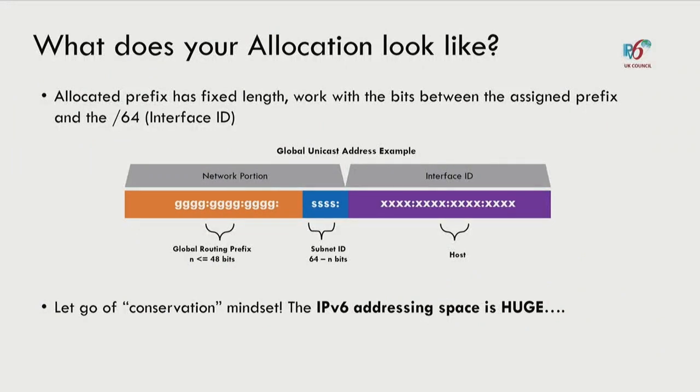Once you have your global unicast address prefix, you work with the bits between the allocated prefix and the interface identifier. The graphic behind me illustrates this: the global routing prefix is usually /48 or shorter, and anything between that number and /64 is where you create your addressing plan. The key message is: let go of the conservation mindset. The space is really huge, so you can be comfortable and stretch to create the right structure.